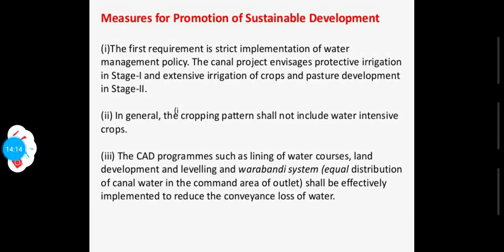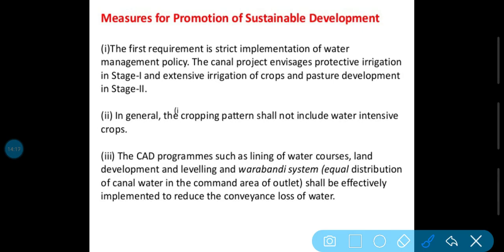Iske baad mein sustainable development ko promote karne ke liye, isko sahi karne ke liye kya kiya gaya. Second stage ke andar extensive irrigation of crops and pasture development — pehle mein sirf irrigation ke liye, doosre mein pasture development jaise afforestation bhi saath mein badhawa diya gaya. In general, the cropping pattern shall not include water-intensive crops. Log jaise rice vagera lagana start kar diye the, to soil salinity badh rahi thi; ab is area mein water-intensive crops na lagaayi jayein.